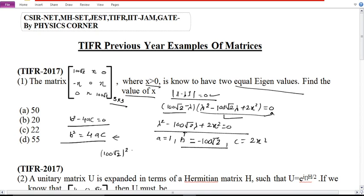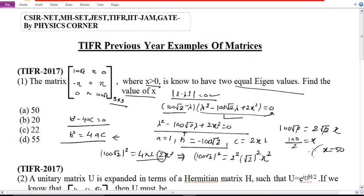This equation gives two eigenvalues. This is a quadratic equation. For equal roots, b square minus 4ac equals 0. So 100 root 2 whole square equals 4 times 2x square. We can write this as 100 root 2 whole square equals 2 square into 2 into x square. Taking square root on both sides, 100 root 2 equals 2 root 2 times x. Root 2 gets cancelled. Therefore, 100 by 2 equals x.